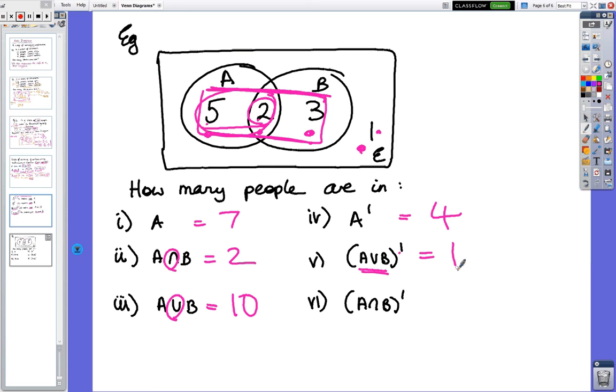The last one is the hardest one, not really hard. There's those two people, those two people are A and B, so the not is those 5, those 3, and that 1. So 5 plus 3 is 8, 8 plus 1 is 9.